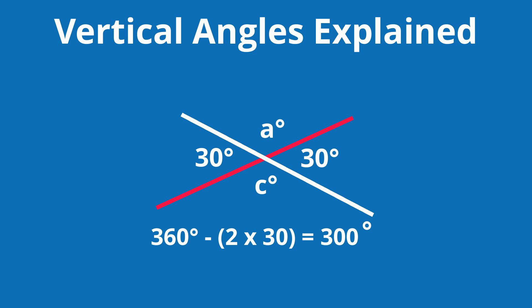Angles A and C are also vertical angles. So 300 divided by 2 is 150. So here are all four angles.